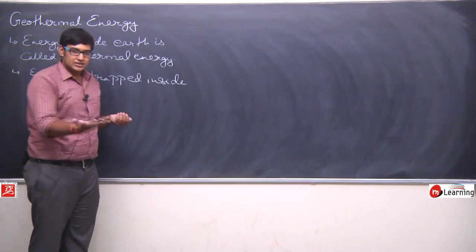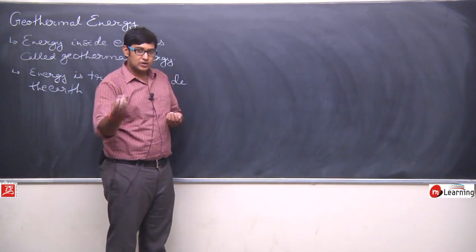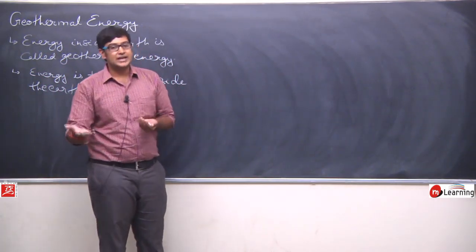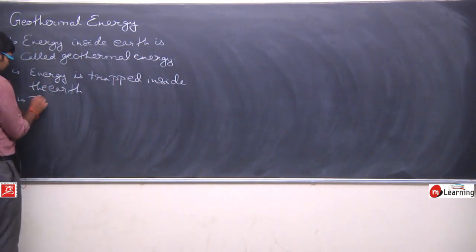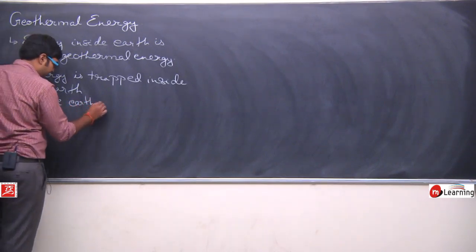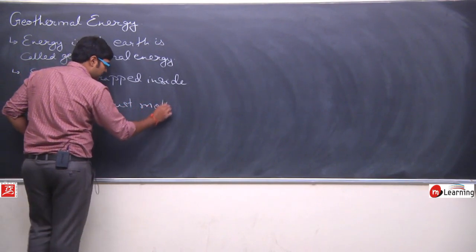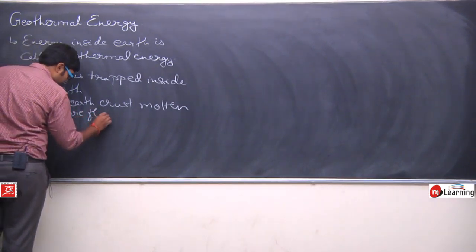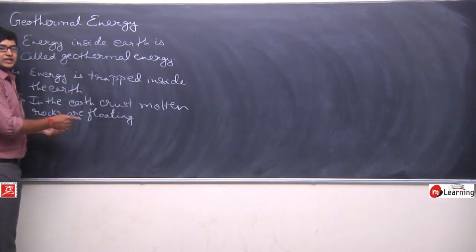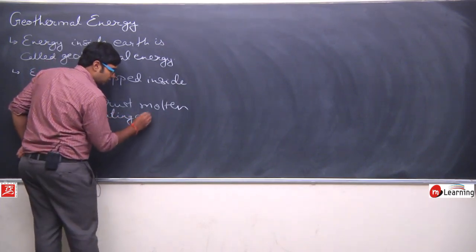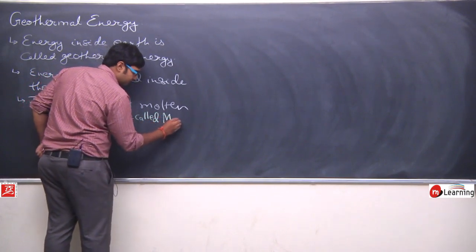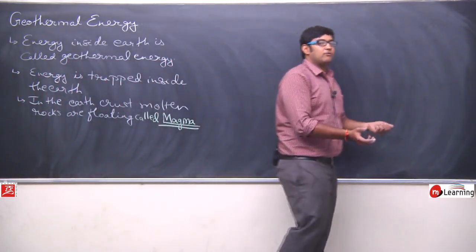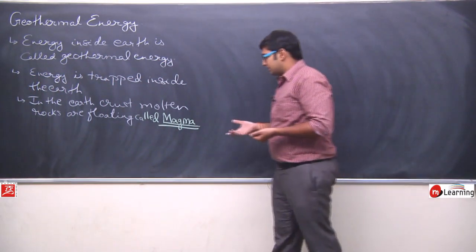Slowly, as you go deeper inside the earth, at the surface you will see rocks, a little deeper still rocks but warmer. When you go very deep inside the earth, you will find molten rocks floating inside. In the earth's crust, molten rocks are floating, and these molten rocks are called magma. Magma is basically the molten form of rocks — a liquid-like form. It's not quite liquid either; it is a semi-solid kind of form.